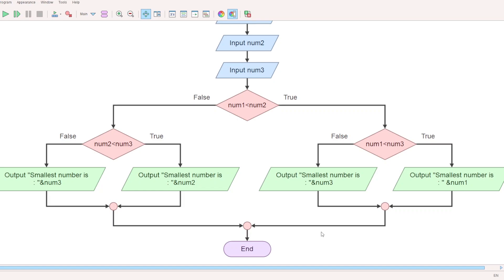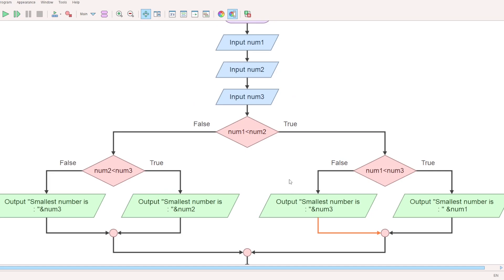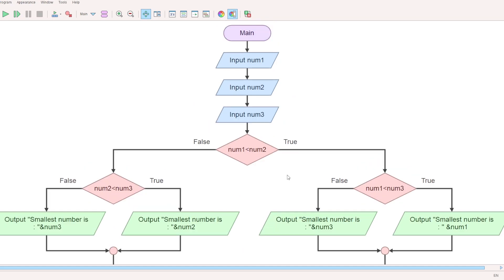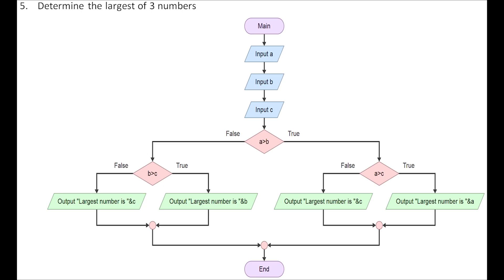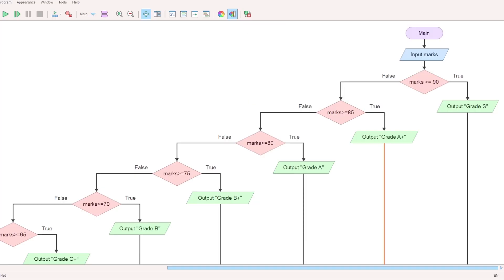Now we have checked all the conditions and all the possibilities. Then another question: Determine the largest of three numbers. If you have three numbers and need to find the largest, we check the reverse condition.